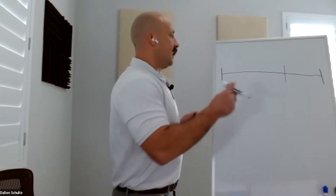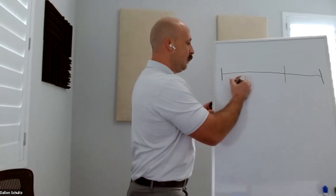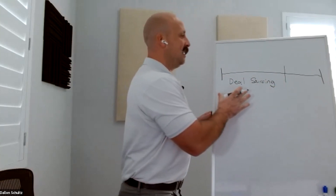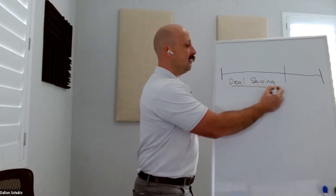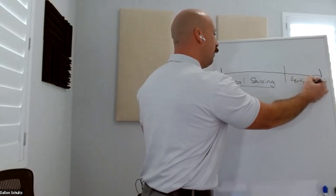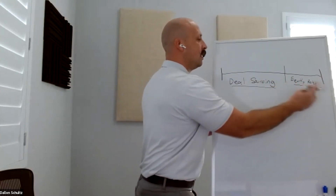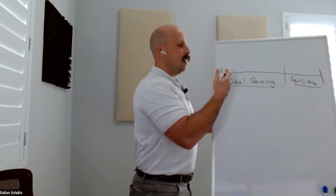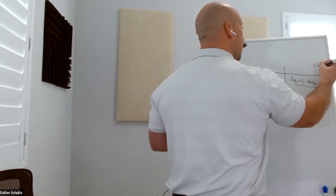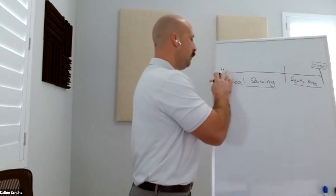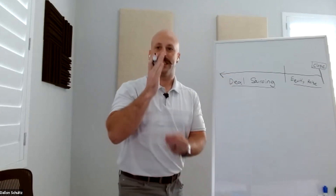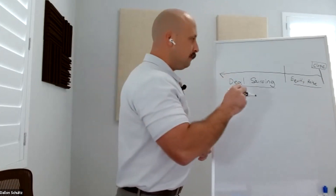We have a couple of different phases here on the timeline: the deal sourcing phase and the equity raise. These are ongoing processes. Along the way there are different things that happen — the hash marks represent milestones — and over on this end is where you close on the deal. Deal sourcing doesn't start at a specific time; it's an ongoing process represented by an arrow.